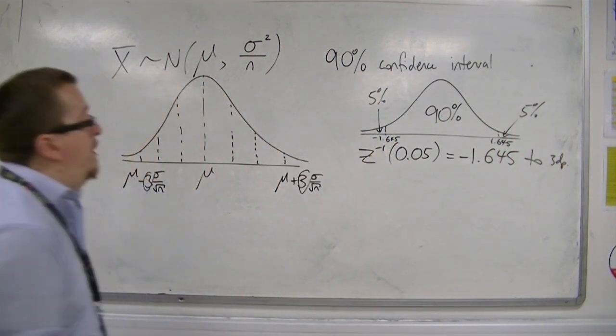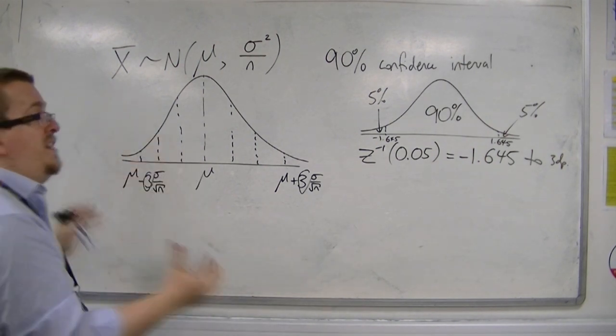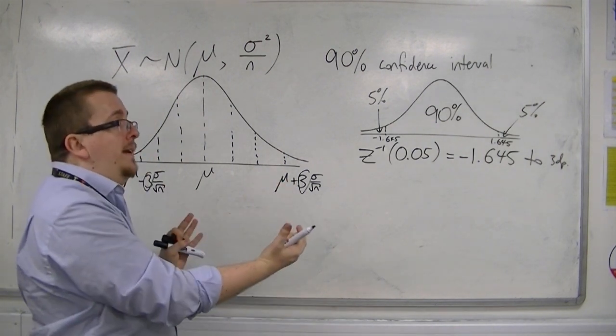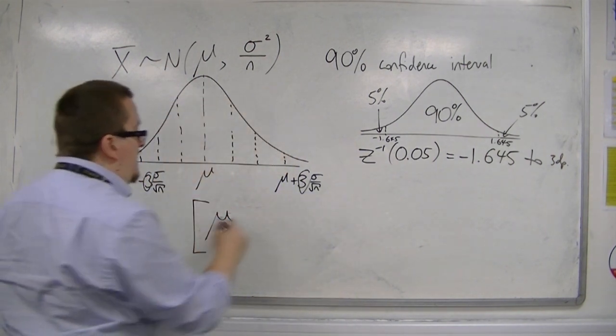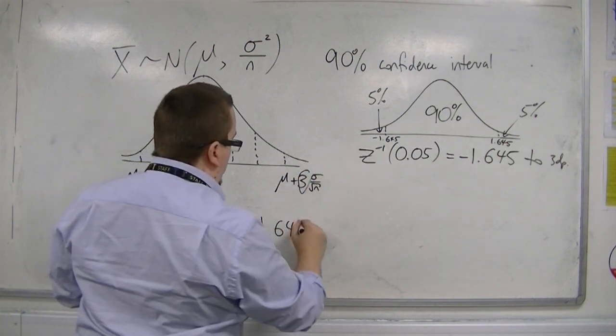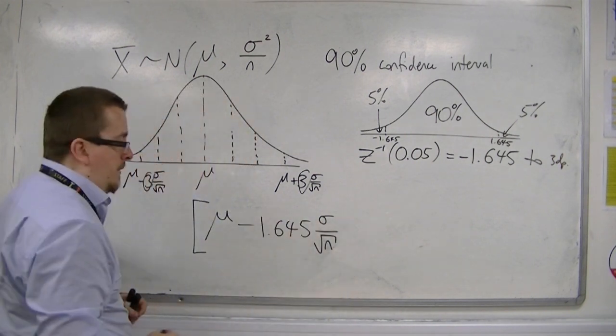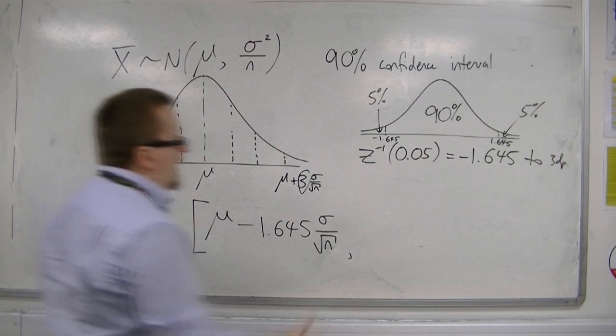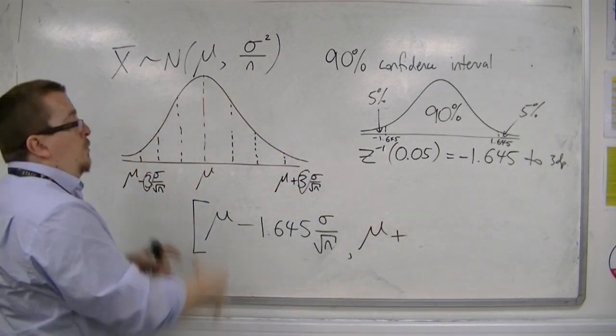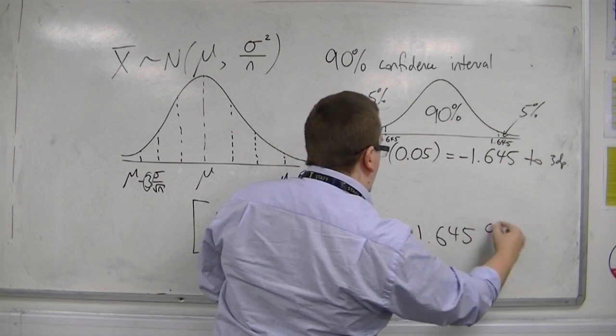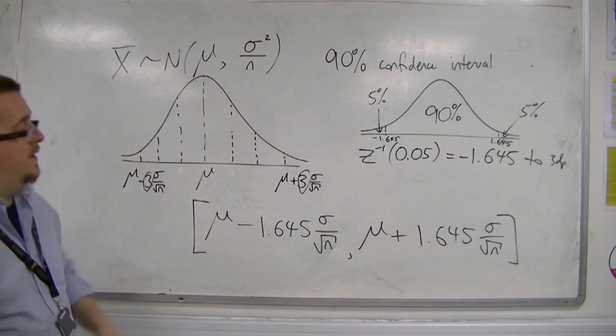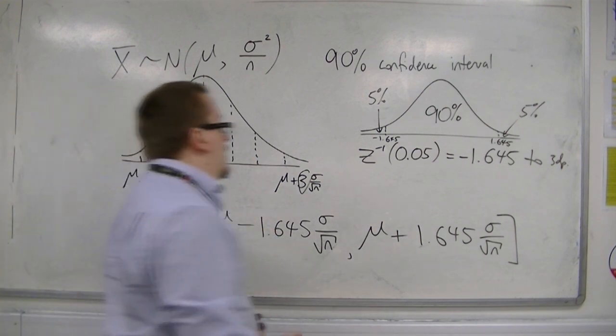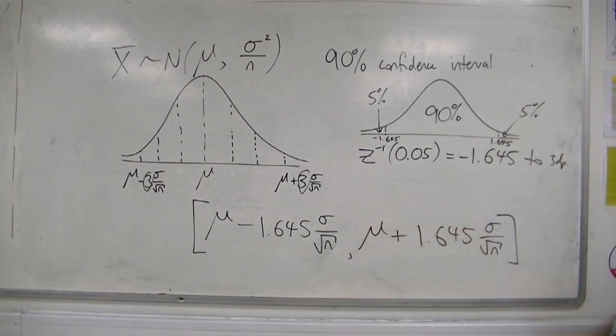So, what we would be saying is to construct a confidence interval where I'm 90% confident that the population mean lies between these two values. The first one is the mean take away 1.645 times the standard error. That would be my lower confidence limit. And the upper confidence limit would be mu plus 1.645 times sigma over root n, the standard error. And this is how we are going to be calculating a confidence interval. So, this tells me how confident I am of the population mean being between these two values.